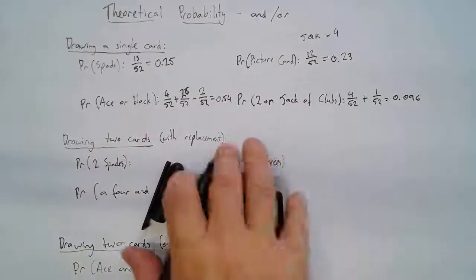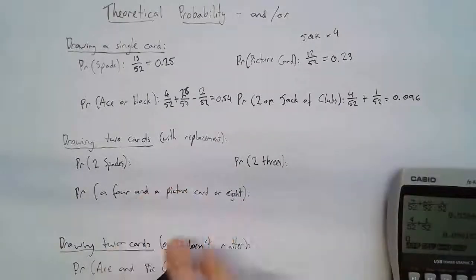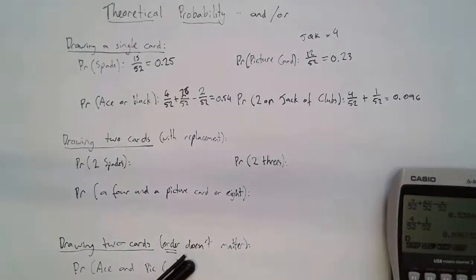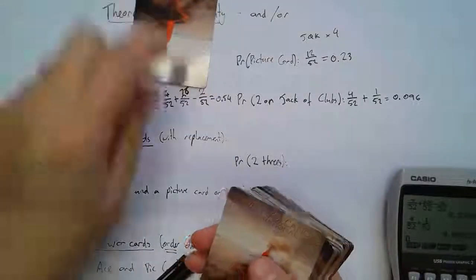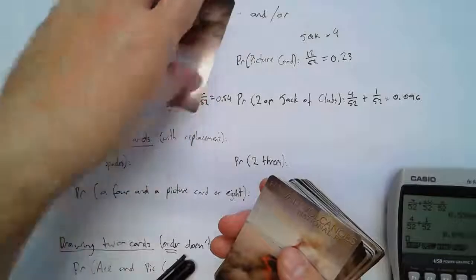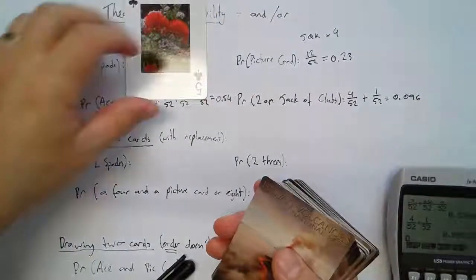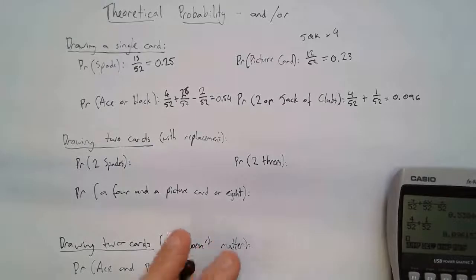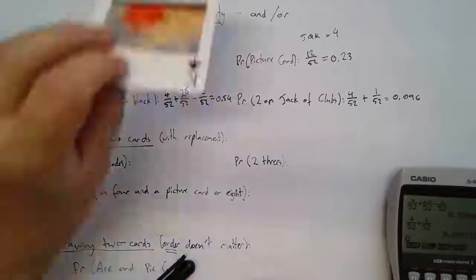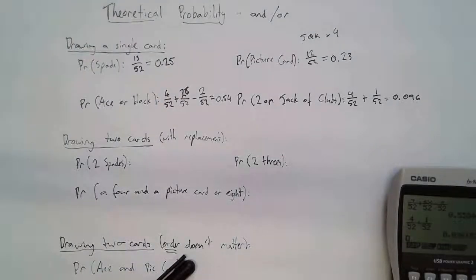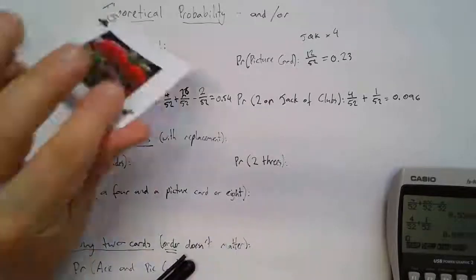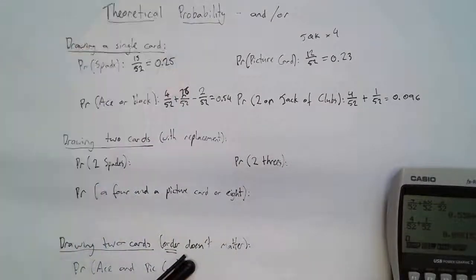Next up: drawing two cards with replacement. I take a look at the card and then put it back — replacing it — and then take out another card. The key is just thinking about it like that: draw out a card, put it back, then take out another card. Notice the word AND here — this is an AND situation.